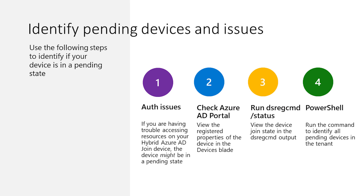Now that we know what a pending device is, let's discuss how to identify pending devices and their related issues. There are four main ways to identify a pending device or pending device issue. A common issue related to pending devices is authentication issues. If a device is having these problems, it might be due to the device entering a pending state. To check if the device is in a pending state, complete one of three options. First, check the registered column in the Azure AD portal. If there is a timestamp, the device is registered; if not, the device is in a pending state.